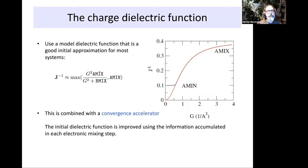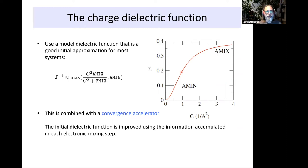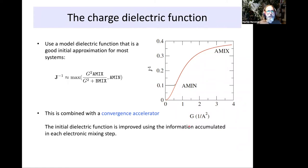The defaults for these parameters serve as a good initial approximation to the dielectric function. A density component at reciprocal space lattice vector G of length one will be mixed in with about 0.2 in this approximation. But that is only the initial approximation — the Broyden mixer learns a better approximation as it iterates. As we iterate toward self-consistency, the mixer builds an increasingly accurate approximation to the dielectric function, accelerating convergence.